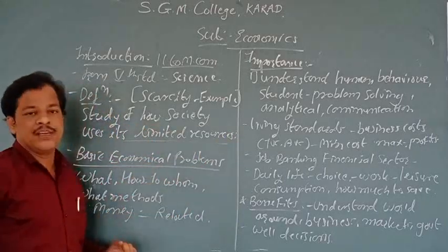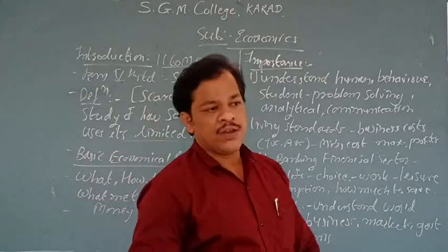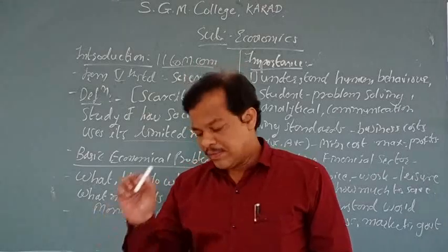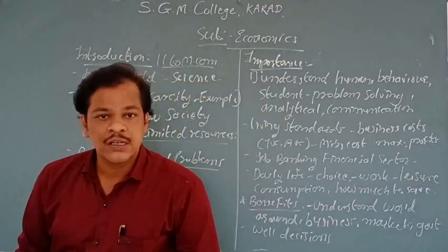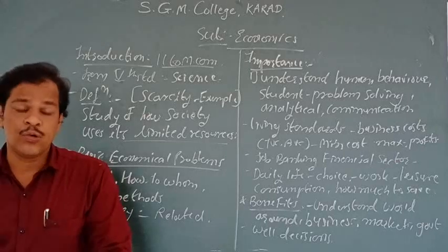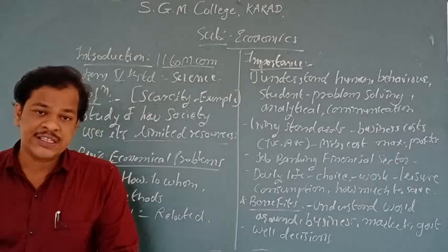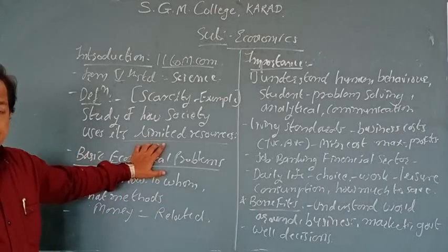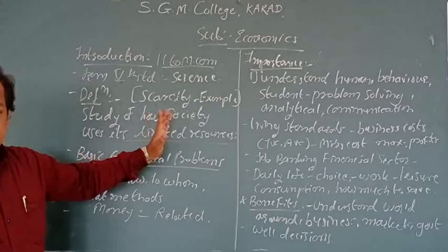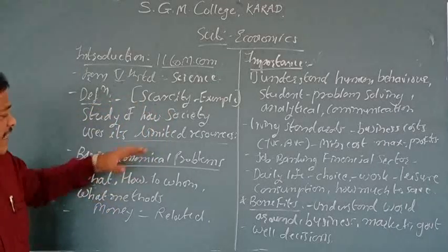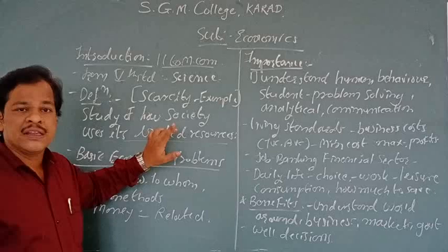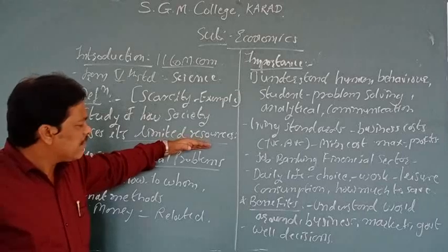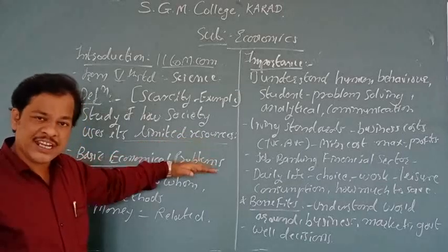For example, consider limited resources. Suppose the population of the world is 700 crore. Can you say that all people have their own bungalows, their own cars, their own aeroplanes? Definitely not. Because some people are very poor. So if you divide society into classes: one class is very rich, the second is the middle class, and third is the lowest class or BPL — below poverty line level.